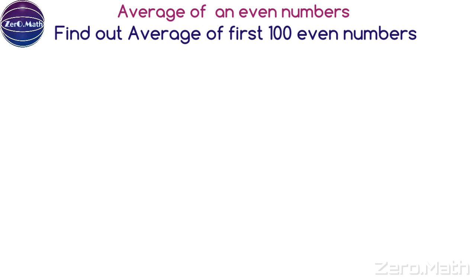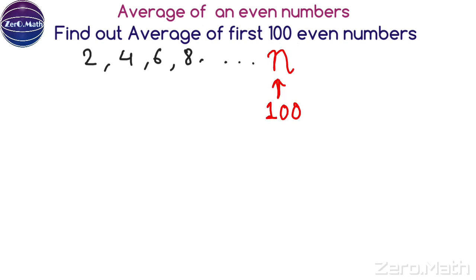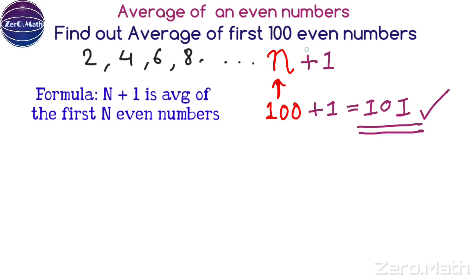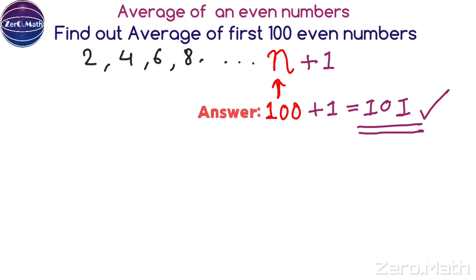Even numbers are divisible by 2 — like 2, 4, 6, 8, and so on. So 2 is the first even number, 4 is the second, 6 is the third, and so on. The trick: if the problem asks for the average of the first N even numbers, the answer is always N + 1. Here N is 100, so the answer is 100 + 1 = 101.